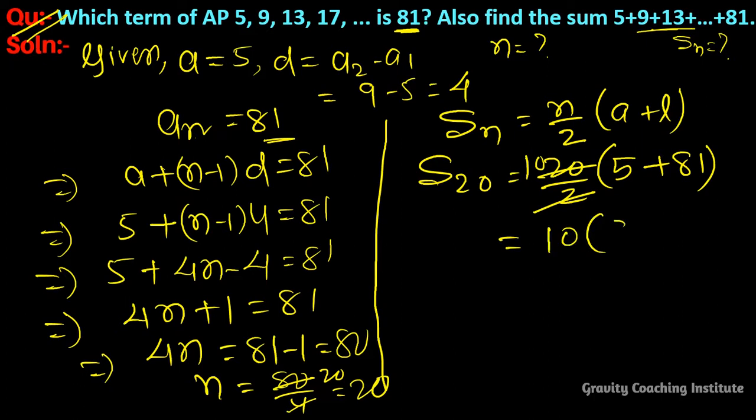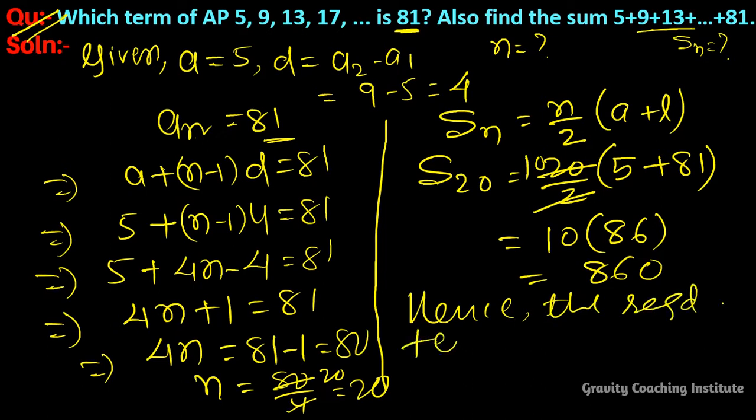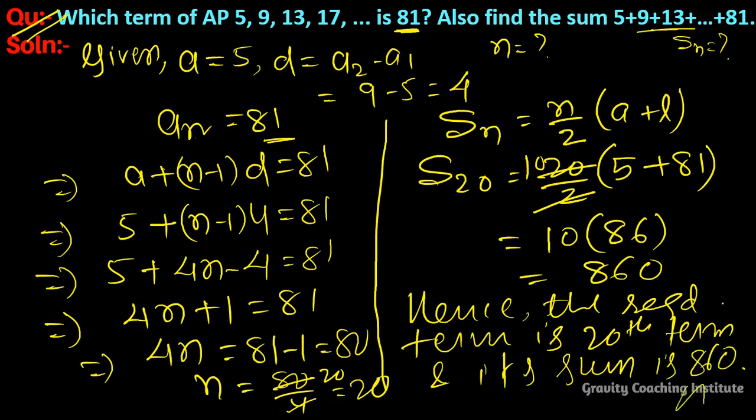10 × 86 = 860. Hence, the required term is the 20th term and its sum is 860.